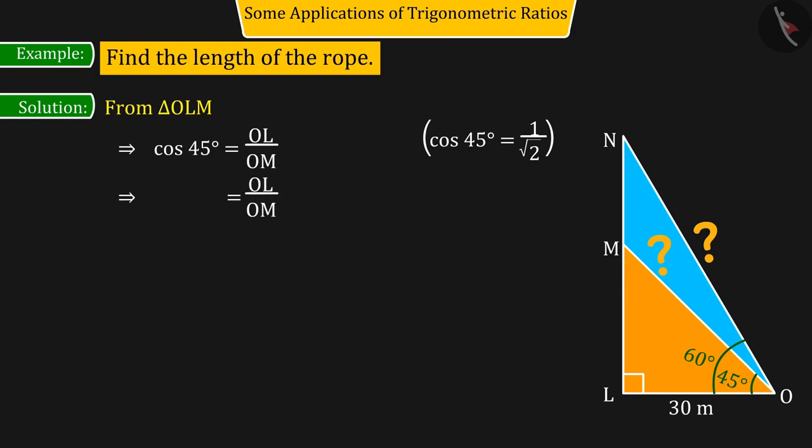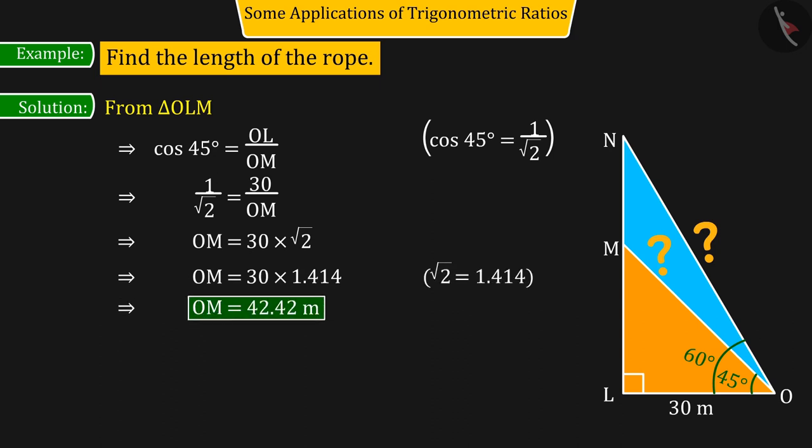On substituting and solving these values, the value of O, M is found to be 42.42 meters. So, we can say that the length of the rope from point O to M will be 42.42 meters.